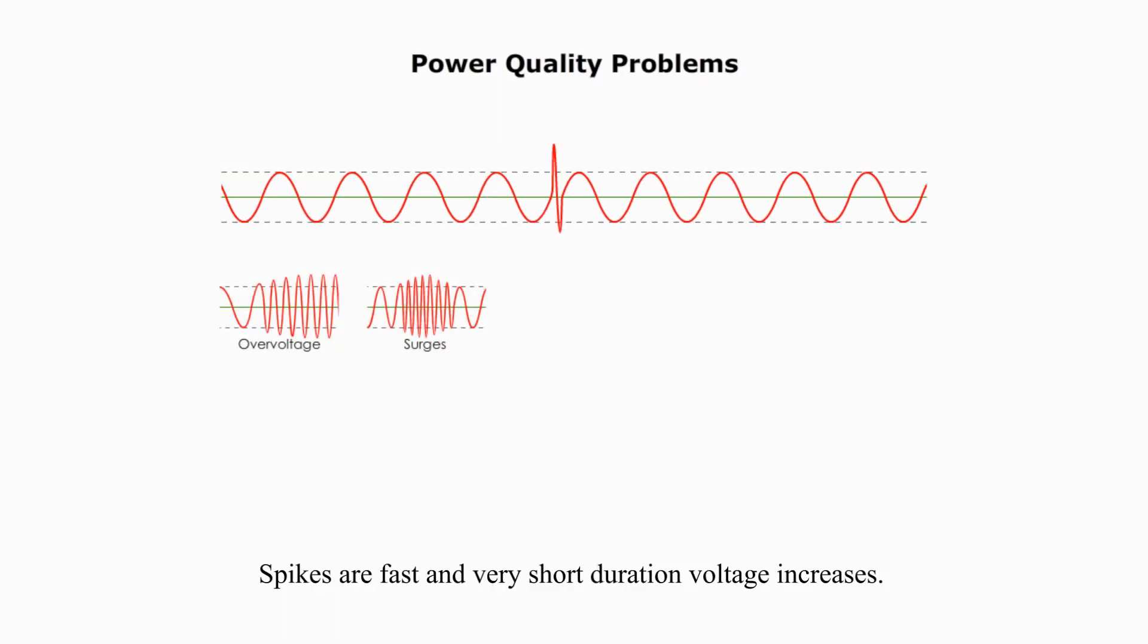Spikes are fast, very short duration of voltage increases. They may be caused by lightning strikes or power outages.